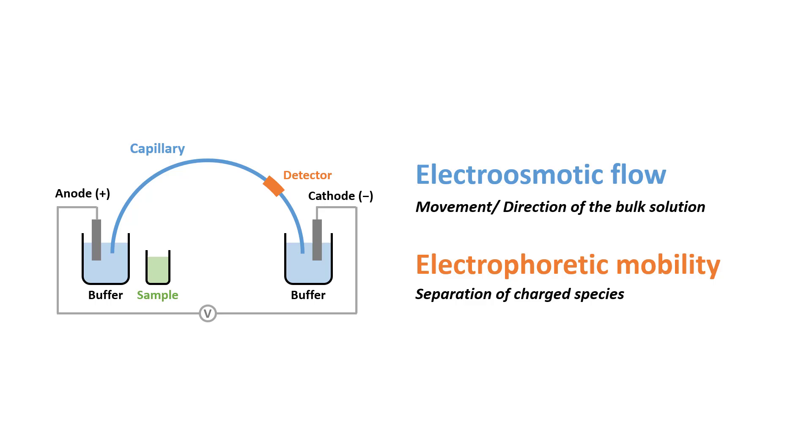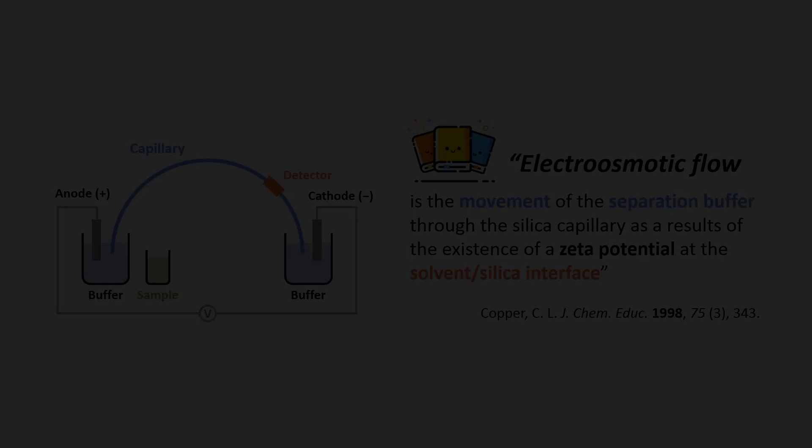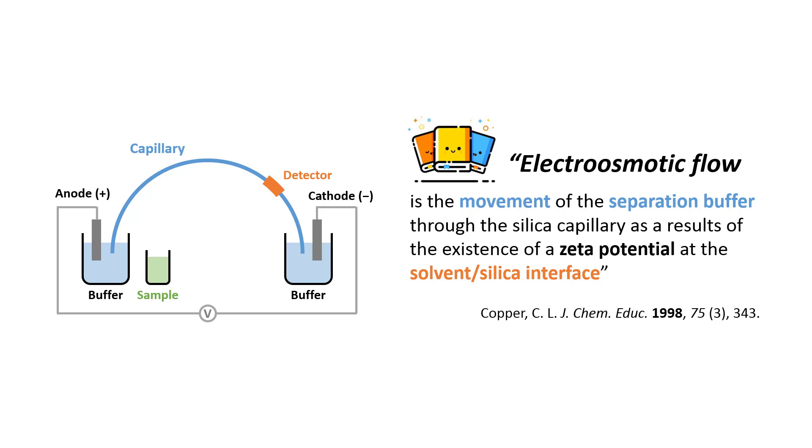By definition, electroosmotic flow is the movement of the separation buffer through the silica capillary as a result of the existence of a zeta potential at the solvent-silica interface. One of the key words we see here is the solvent-silica interface. So to understand what exactly is electroosmotic flow, we need to take a look at what is going on at the solvent-silica interface.